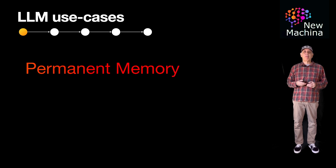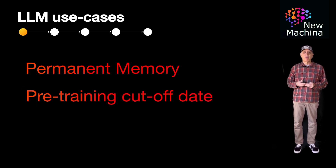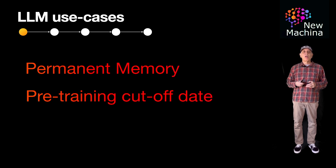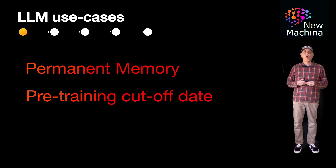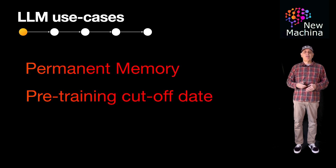The second use case where vector databases help LLMs emerges because of the cutoff problem that all pre-trained LLMs have. LLMs are trained with content up to the cutoff date, after which they are released to production. When an LLM answers a user prompt, its response only takes into account content it has been pre-trained on before the cutoff date. One way to solve this is to insert recent, more timely content into a vector database, so when the user prompts an LLM, the system can look for new semantically relevant documents and include them with the prompt. The LLM's response will then be generated using more recent, up-to-date content.